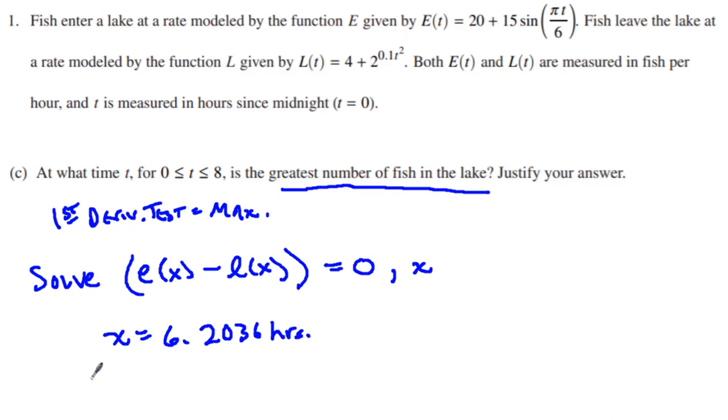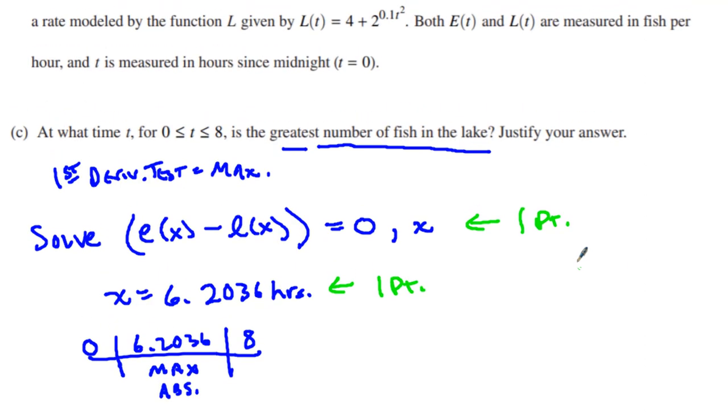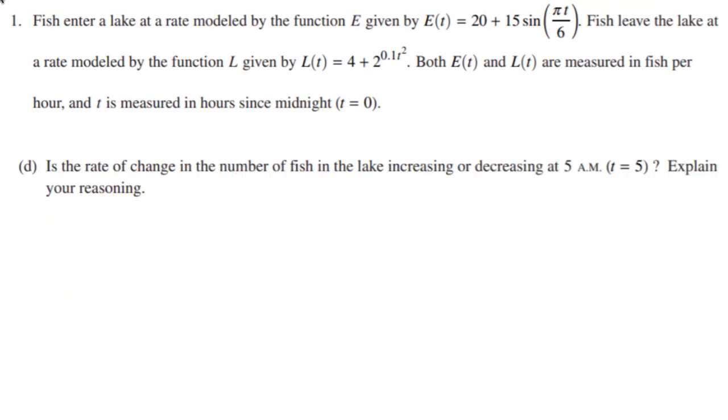Which means that is where a possible critical number is. Now keep in mind we also have to take into account zero, 6.2036, and eight. And you can graph it, you can do whatever you want in order to find out that this will be the absolute maximum of this function. Now the AP exam gave students three points for this problem, but let's just say this is going to be worth two points for us. You get one point for setting up your E of T minus L of T equals zero and one point for your answer of 6.2036 hours. So we're just going to go two points. I know the AP exam for that year 2019 they gave three points for that, but we're just going to go two points if that's OK when you go to report it.